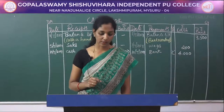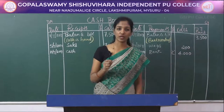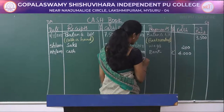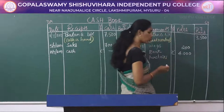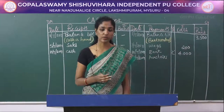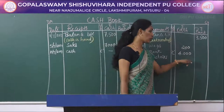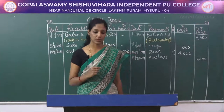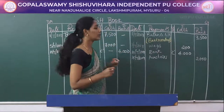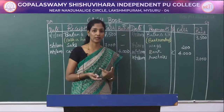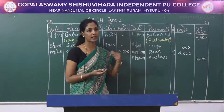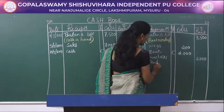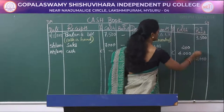The next transaction is 15/7/2017: goods purchased and paid by cheque — this affects the credit side. Write 'purchases' and enter rupees 2000 in the bank column, as we issued a cheque to the supplier. The next transaction 27/7/2017: paid rent rupees 500 — this is a cash outflow, so record it on the credit side as 'rent' with rupees 500 in the cash column.